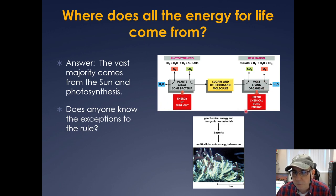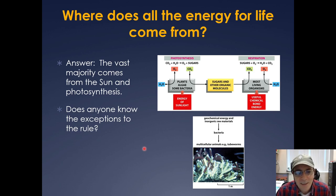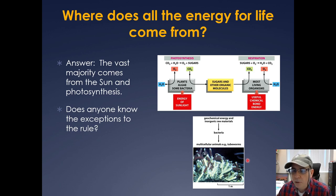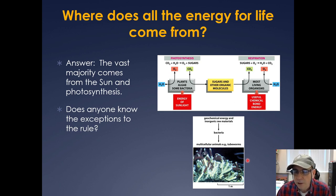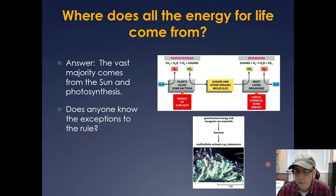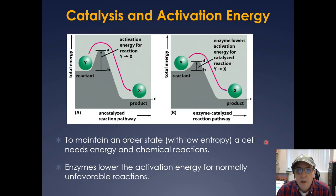Pretty much all life on earth derives its energy from the sun, but there are exceptions. Organisms that live deep at the bottom of the ocean where no sunlight reaches use geochemical energy and inorganic raw materials to derive their energy. Bacteria down there can live on hydrogen sulfide coming from volcanic eruptions at the bottom of the ocean.